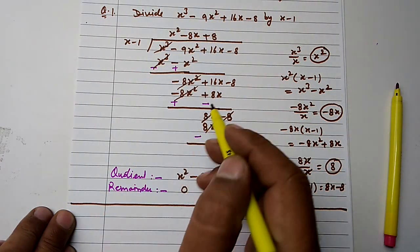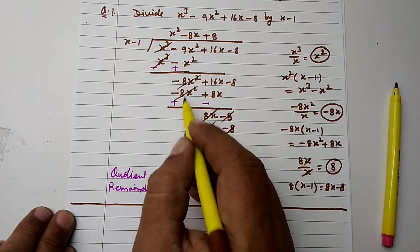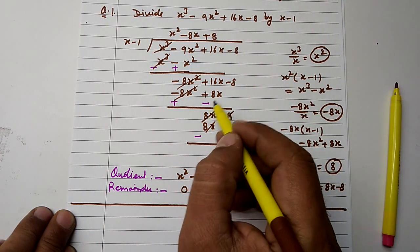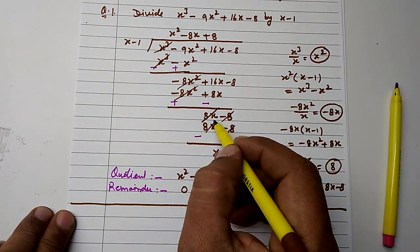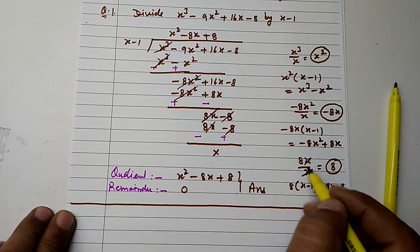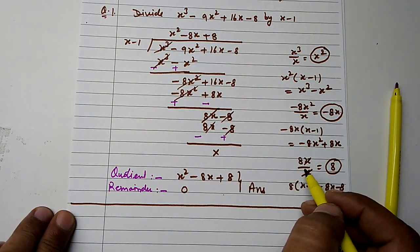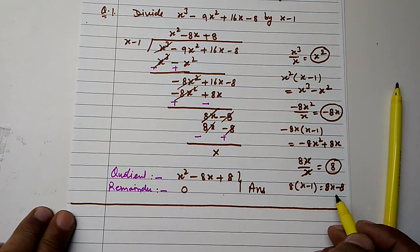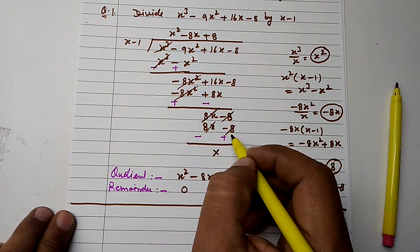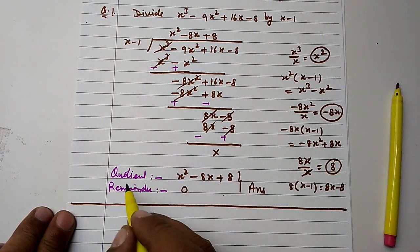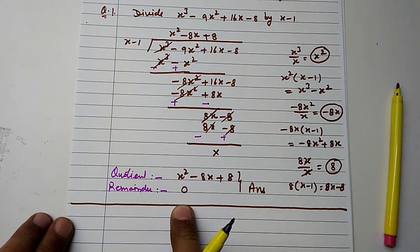We place minus 8x squared plus 8x here and change signs — negative becomes positive. Both like terms cancel. We have 16x minus 8x equals 8x minus 8. Then 8x upon x cancels to give 8, so we multiply 8 by x minus 1 to get 8x minus 8. Sign change causes both terms to cancel. Quotient is x squared minus 8x plus 8 and remainder is 0.